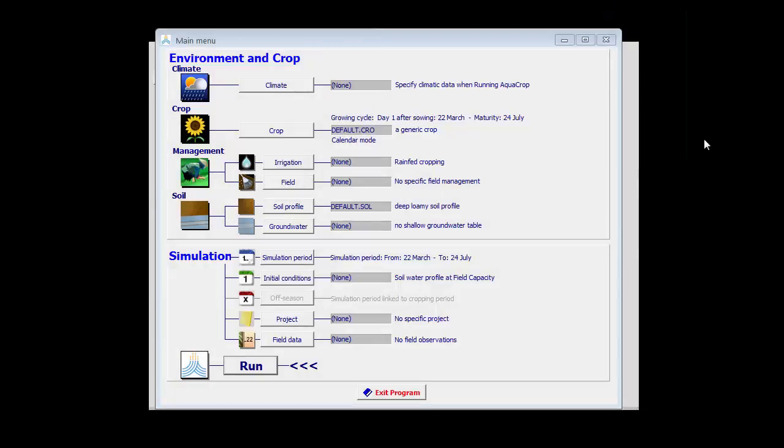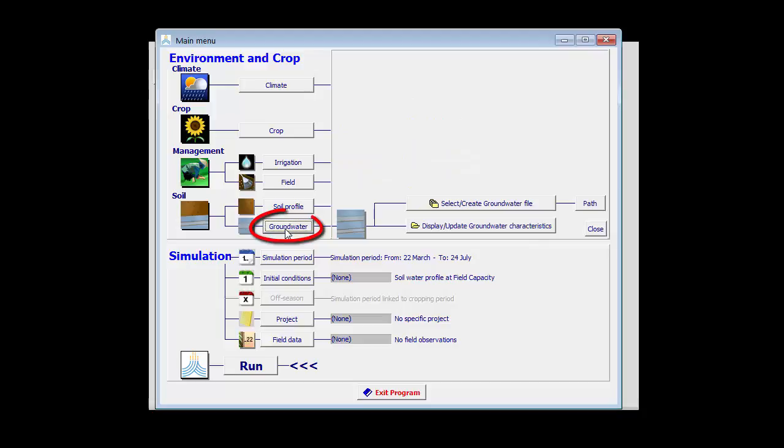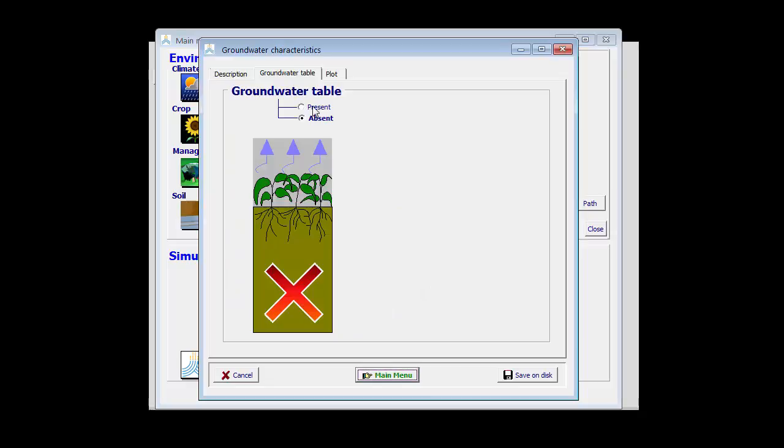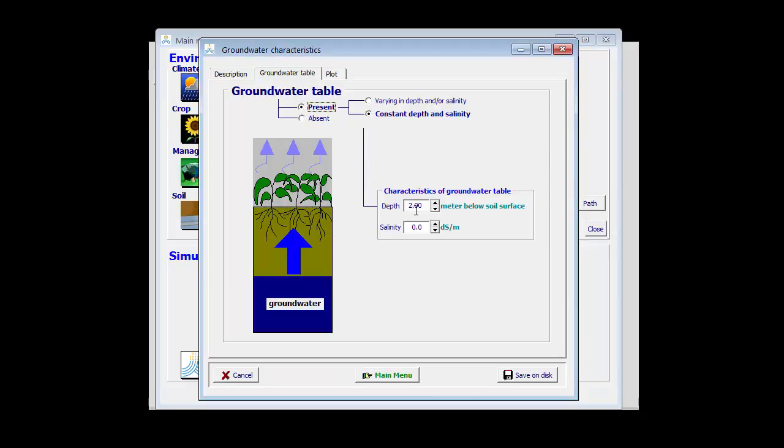To simulate capillary rise, I need to specify that the groundwater table is shallow. By clicking here, I can change the settings and I will select a groundwater table which is at 2 meters. It is constant in this case.